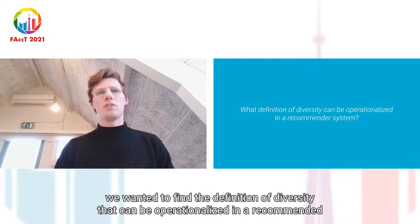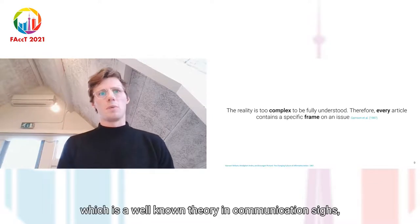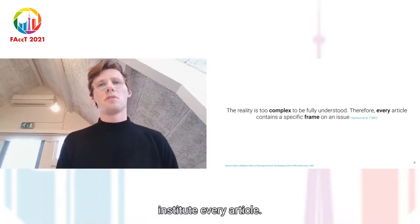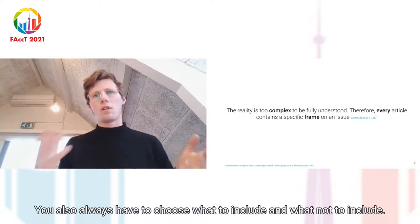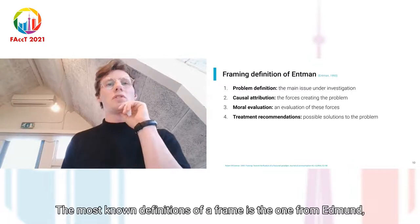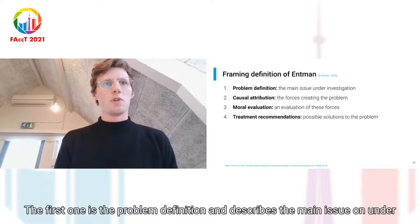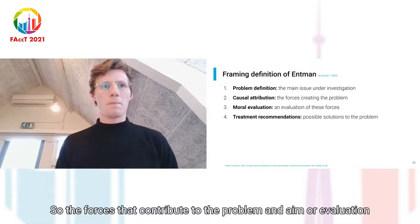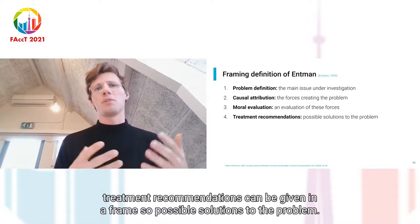As a first step, we wanted to find a definition of diversity that can be operationalized in a recommender system. For that, we used framing theory, a well-known theory in communication science, which says that because reality is too complex to be fully understood, every article contains a specific frame on an issue. One of the most known definitions of a frame is from Entman, which describes a frame by four functions: the problem definition, causal attributions, moral evaluation of those forces, and possibly treatment recommendations.